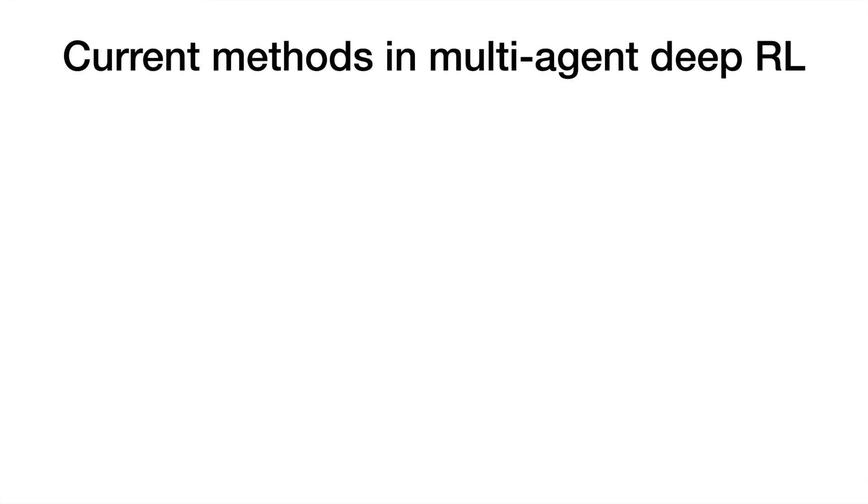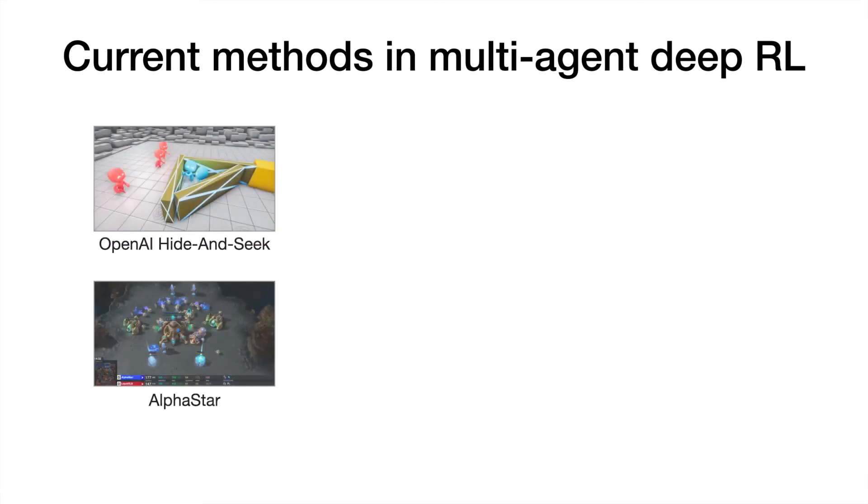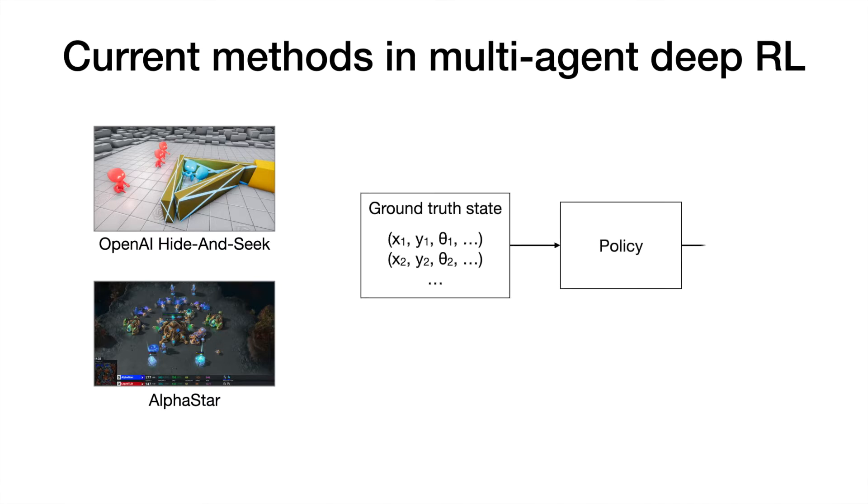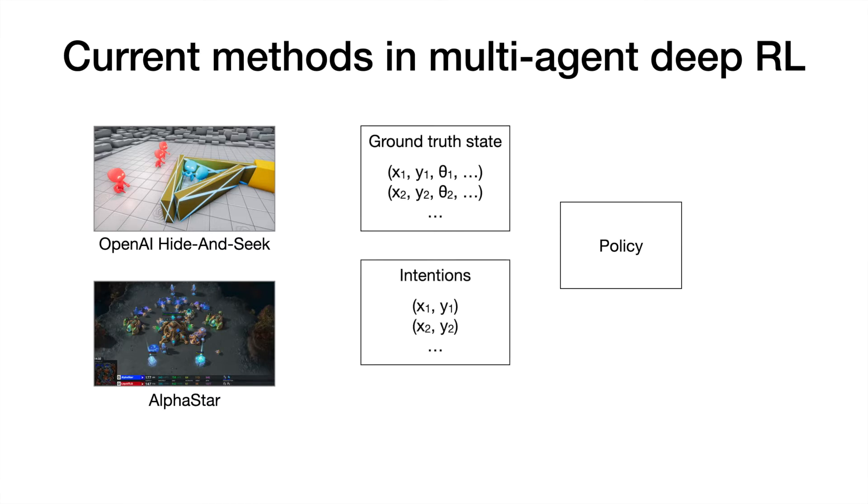So how can we encode intentions in multi-agent deep reinforcement learning? In current methods, it is common to train policies that take in ground truth state information, such as agent poses and object poses. Naturally, intentions can also be encoded using state information, such as the XY target locations of other agents. These intentions are provided to the policy alongside the observations, which enables agents to choose actions based on the intentions of other agents.